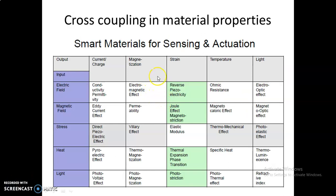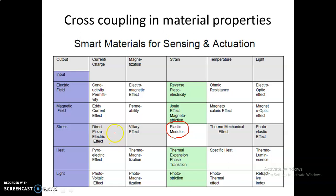This is the material properties matrix. Here we can cross-couple, and it will describe the smartness of the material. In this matrix, the rows indicate inputs and the columns indicate outputs. If we take the stress row and the strain column, the intersection will provide elastic modulus, which describes traditional design criteria — Hooke's law — where stress is directly proportional to strain, and the proportionality constant is elastic modulus. Likewise, each intersection will describe some laws, and the system will operate according to that law.